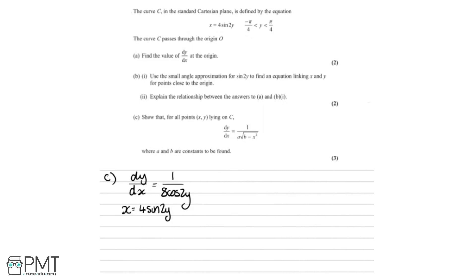Lastly, part C asks us to show that for all points (x, y) on C, dy by dx equals 1 over A multiplied by the square root of B minus x squared, where A and B are constants to be found — three marks. We know that dy by dx equals 1 over 8 cos 2y, and x equals 4 sine 2y. We'll also use the identity sine squared x plus cos squared x equals 1, which with x replaced by 2y gives sine squared 2y plus cos squared 2y equals 1. Our aim is to eliminate all y's from the right-hand side.